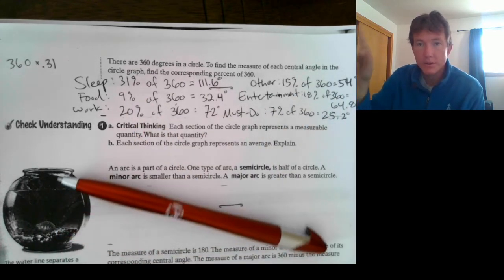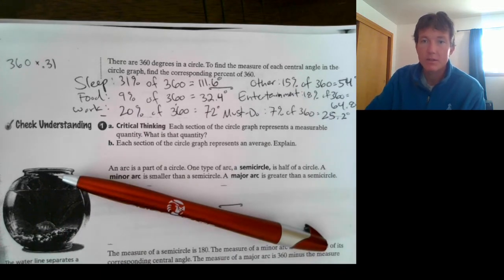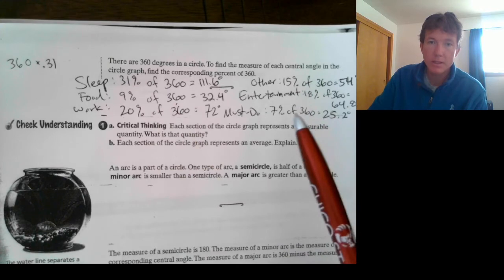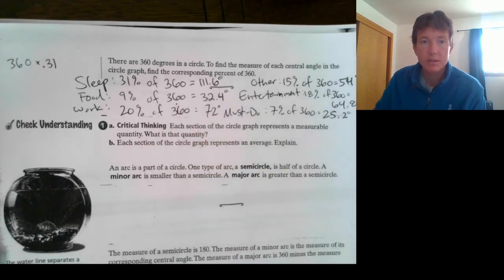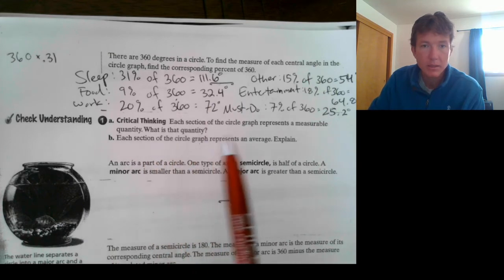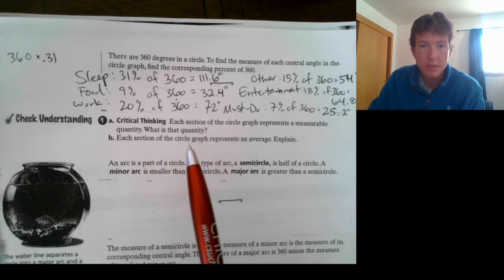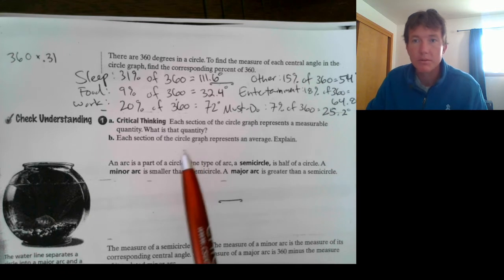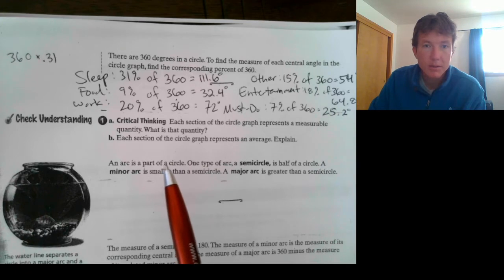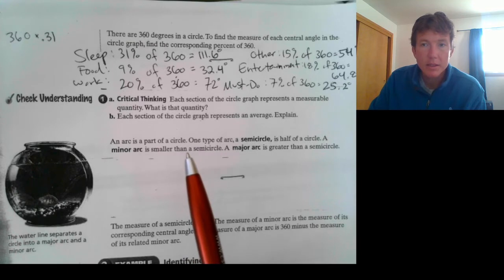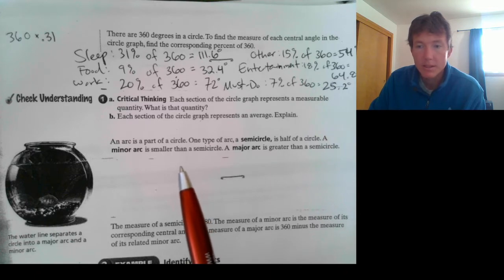So, we're looking at a full circle. That's 100% of the circle. I have 100 percentile points represented in these six categories. And then, I have 360 degrees represented in these six categories. That pretty much answers letter A. What does each quantity represent? It's how much degrees of the circle each category takes up. Each section of the circle graph represents an average explained. That was because they had interviewed a whole bunch of different people and they averaged out their average time spent on these activities.